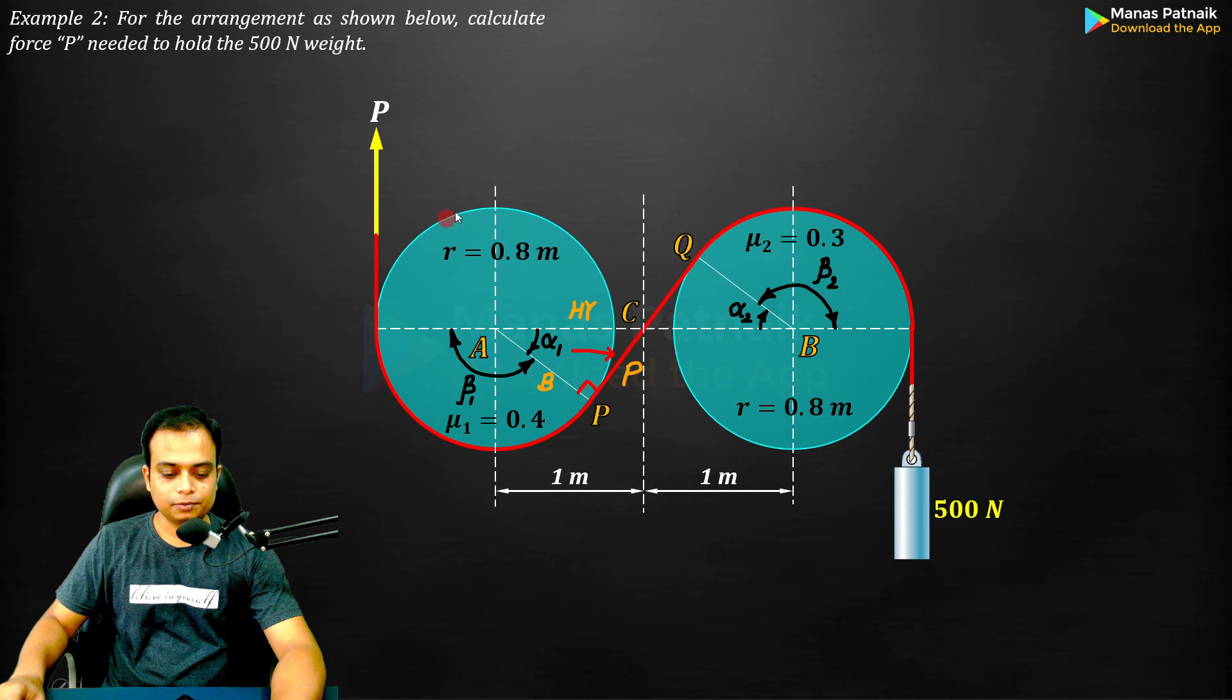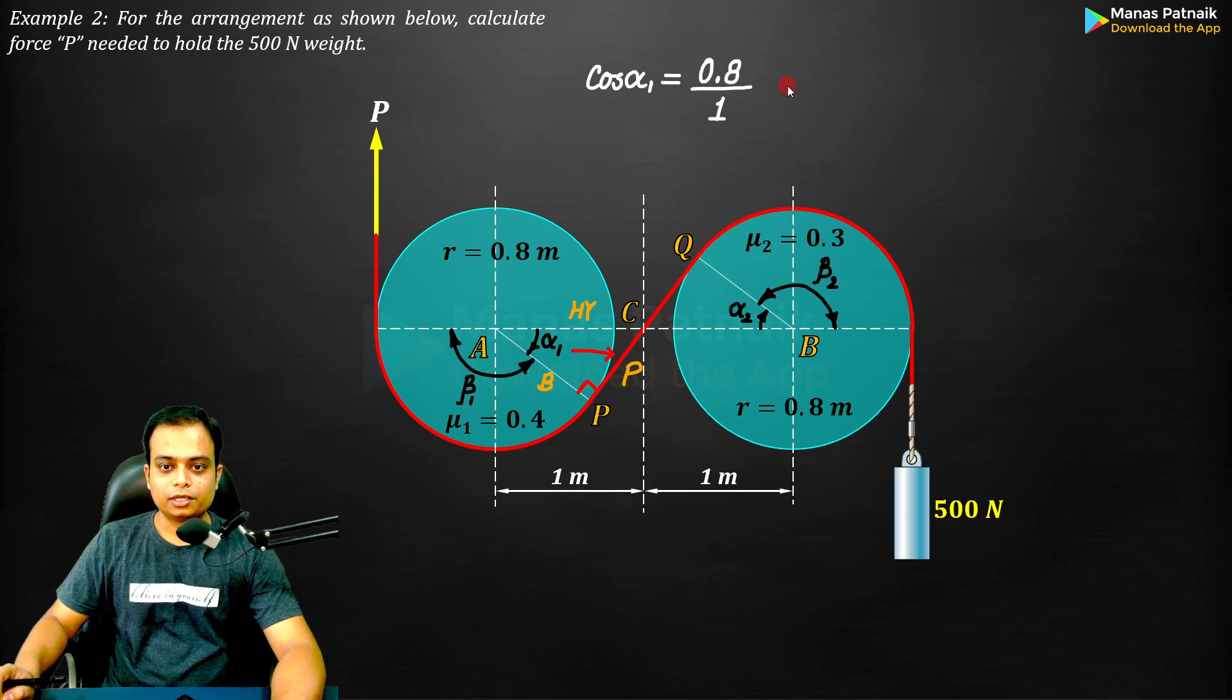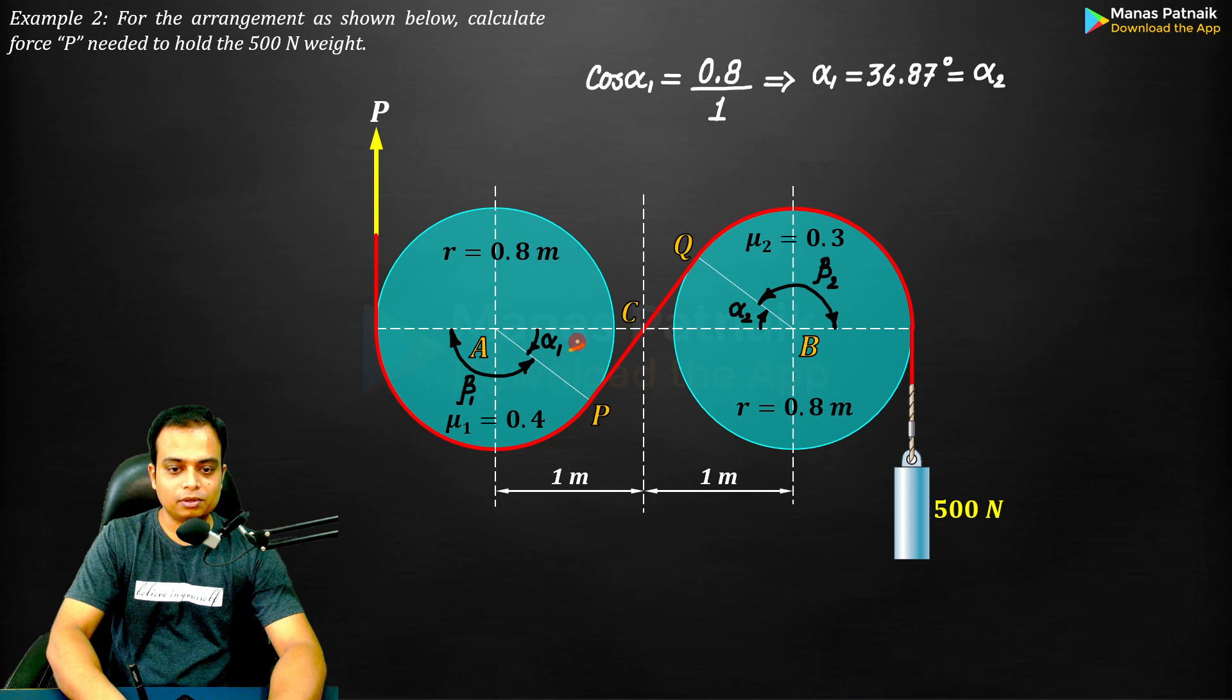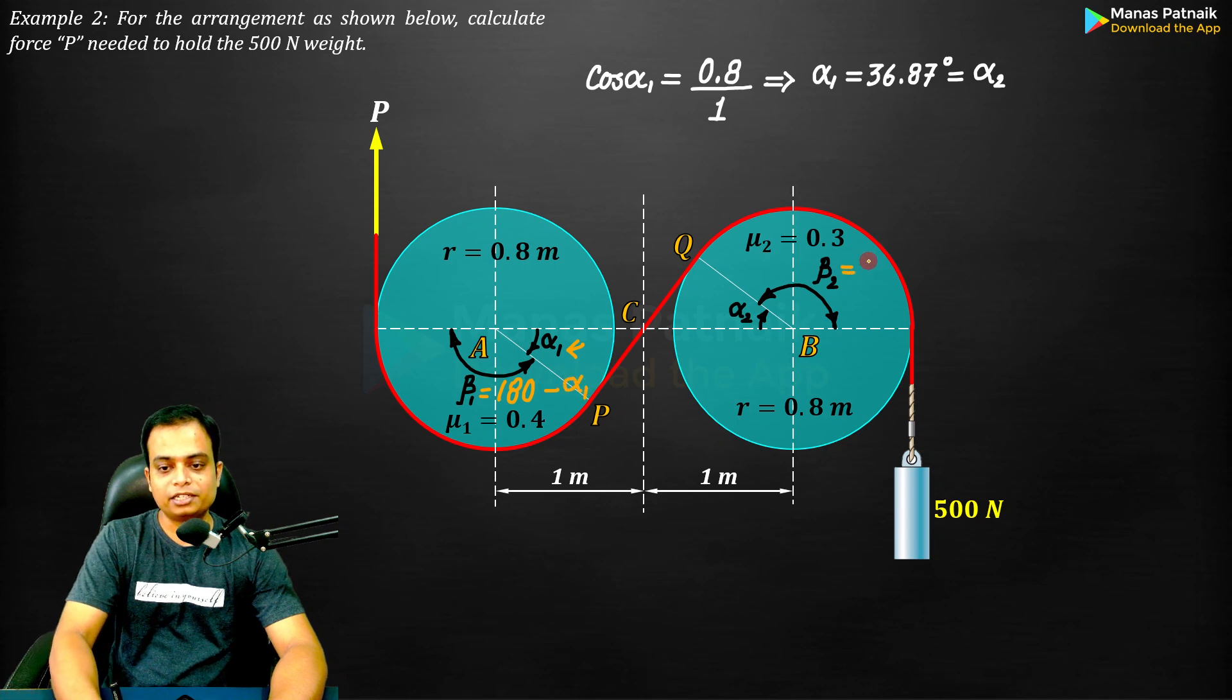Applying base 0.8, hypotenuse 1, do the inverse - this is what you get: 36.87. Now we know this value 36.87, how much is beta 1 going to be? It is going to be 180 minus alpha 1. In the same fashion, beta 2 is 180 minus alpha 2.